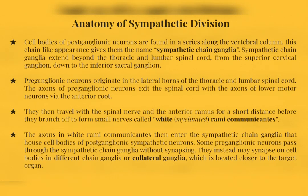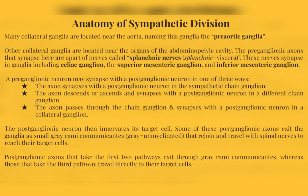The axons in white rami communicants enter the sympathetic chain ganglia that house cell bodies of postganglionic sympathetic neurons. Some of these neurons pass through the sympathetic chain ganglia without synapsing — instead, they synapse closer to their target organ on cell bodies in collateral ganglia. Most collateral ganglia are located near the aorta, naming them the pre-aortic ganglia. Other collateral ganglia are near organs in the abdominal pelvic cavity, and the preganglionic axons there are called splanchnic nerves.